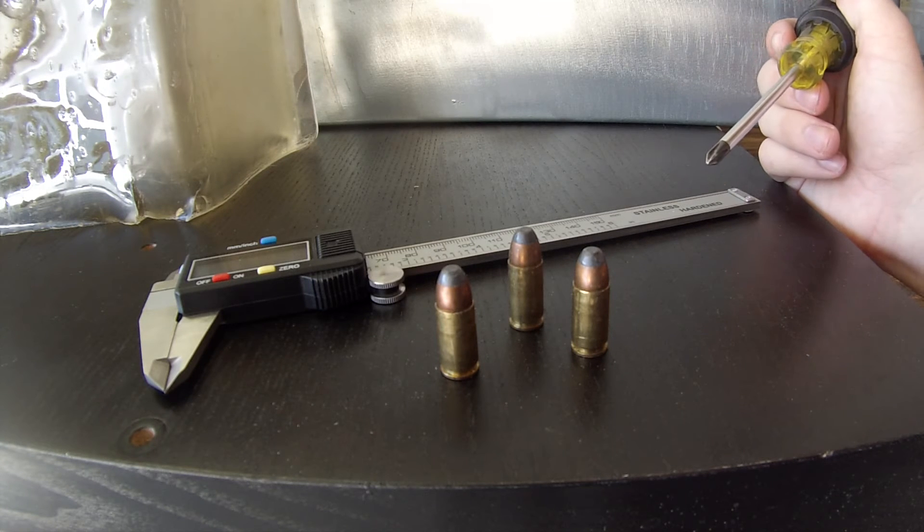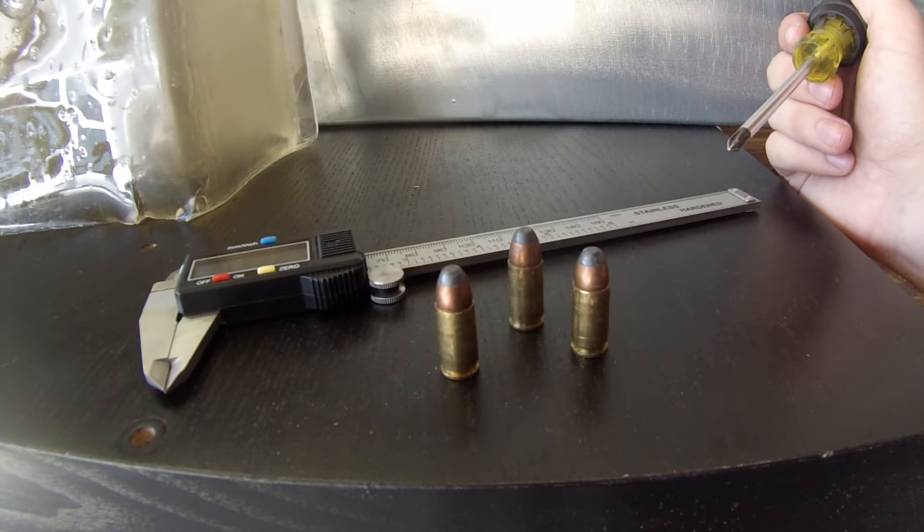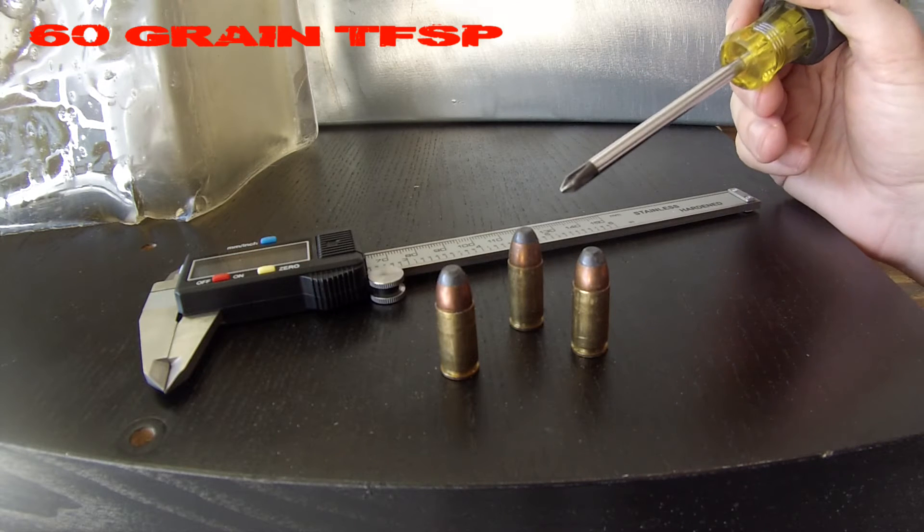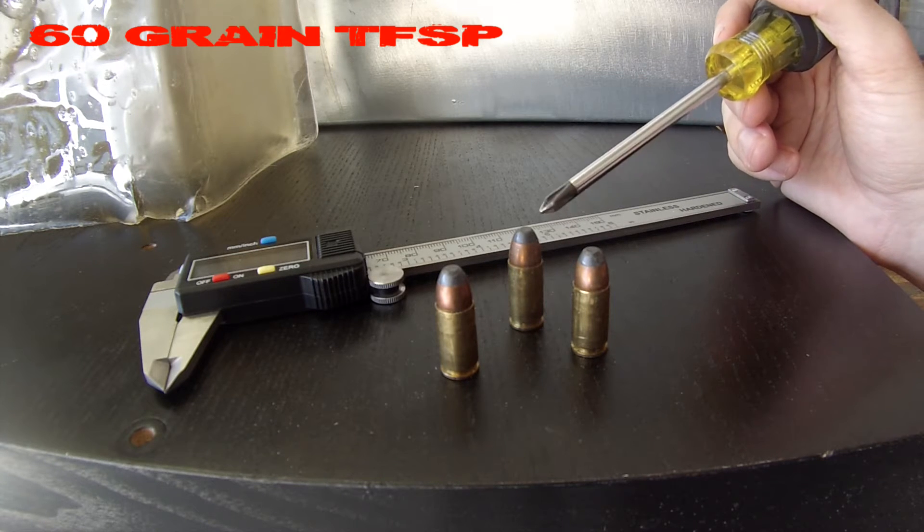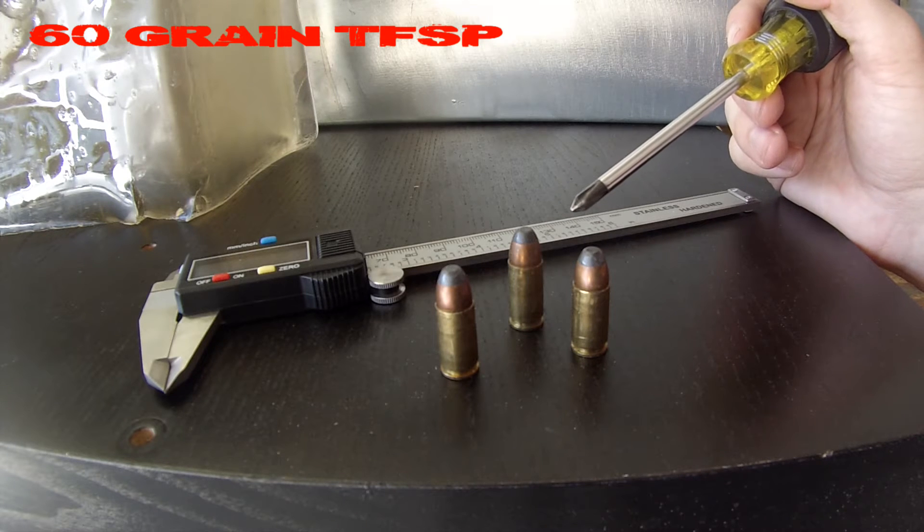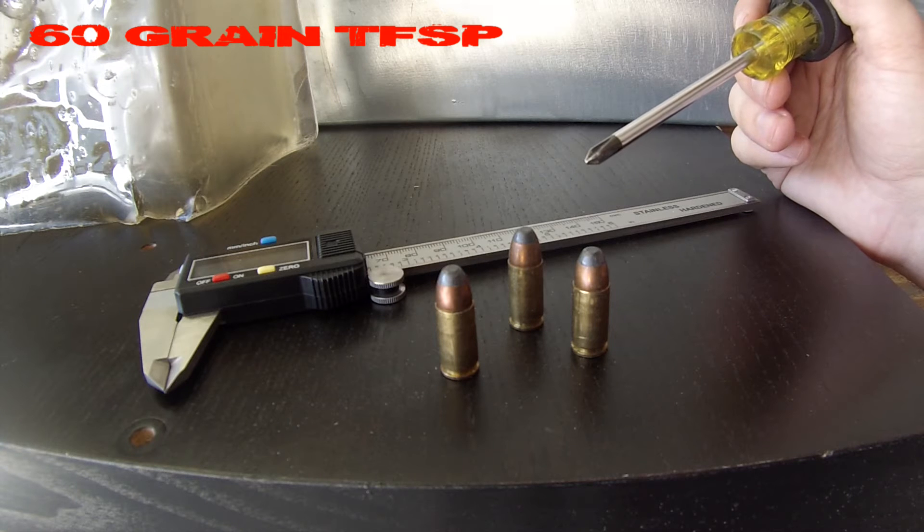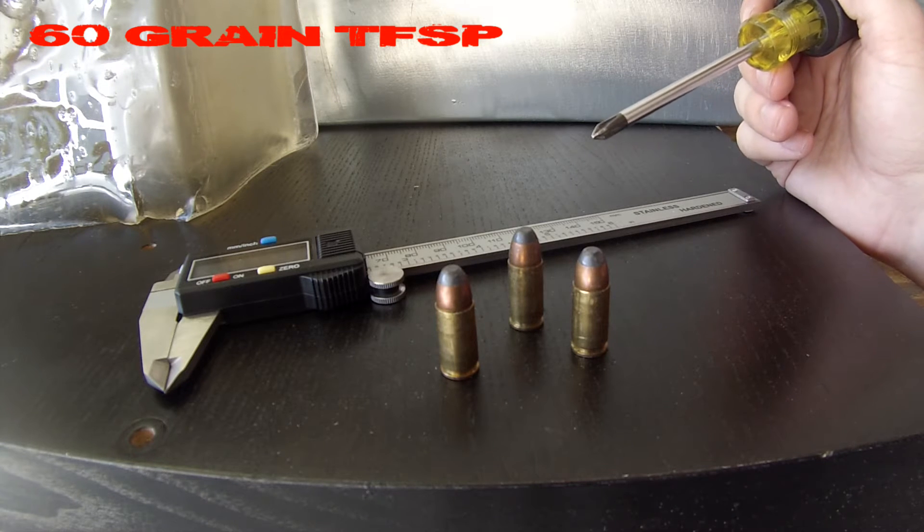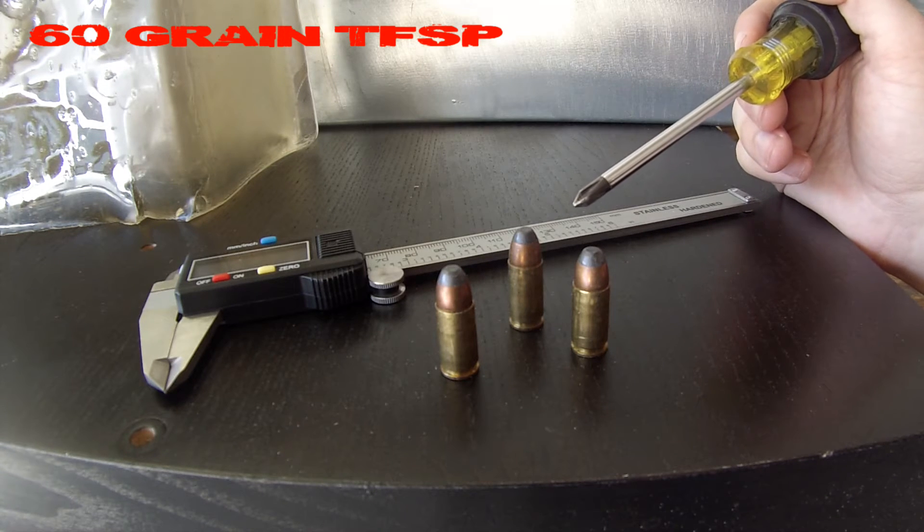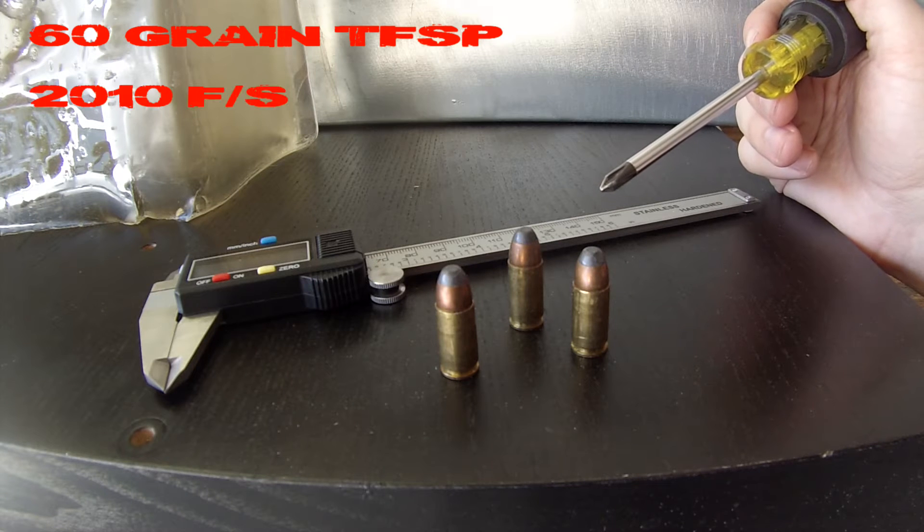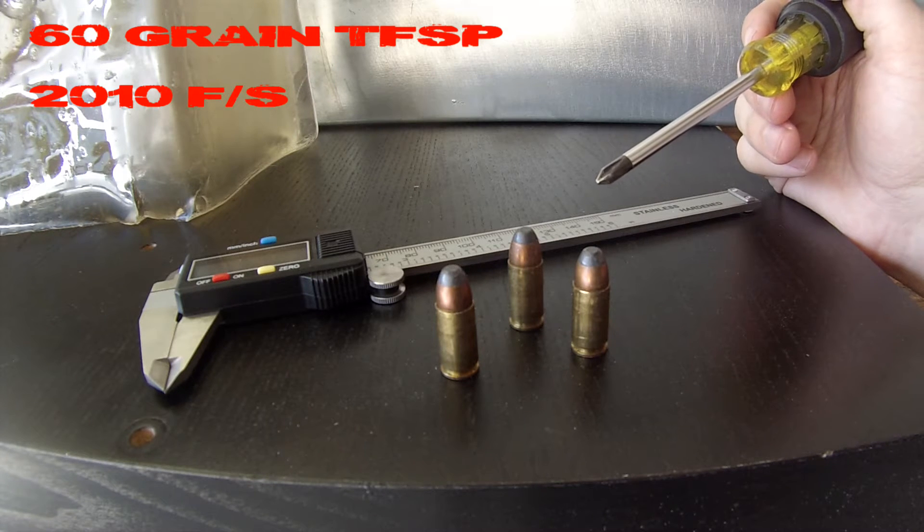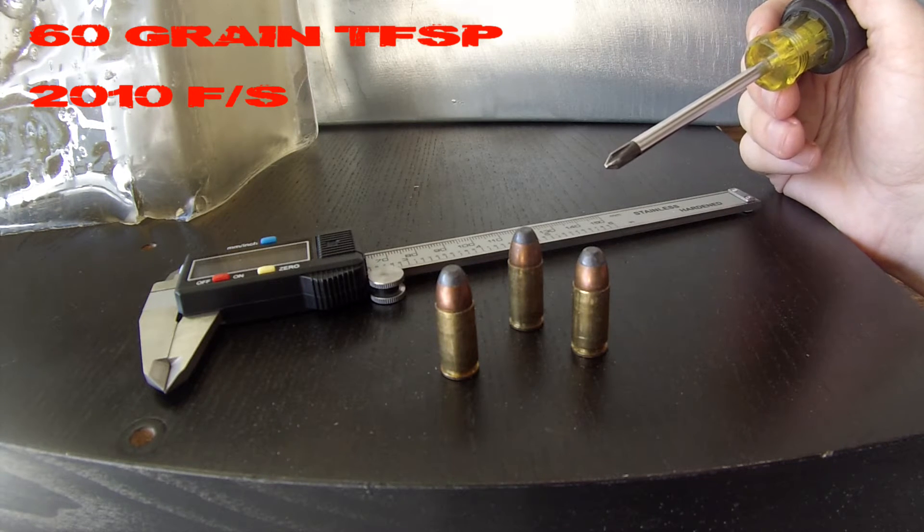Here's a closer look at the RBCD 9mm total fragmenting soft point. It's got a 60 grain projectile which is a lead core covered in a jacket. The purpose of the jacket is to deliver explosive expansion and fragmentation inside soft targets such as the human body. That 60 grain projectile allows the advertised velocity of 2,010 feet per second which is extremely high for a 9mm round.